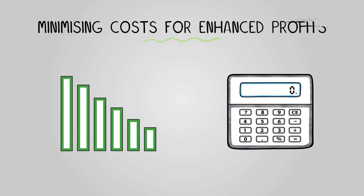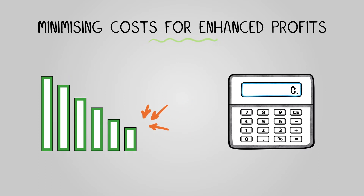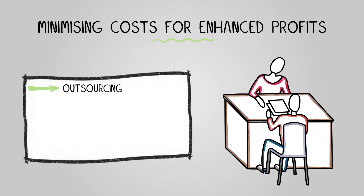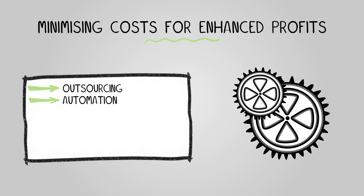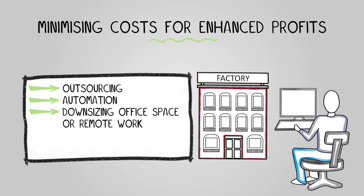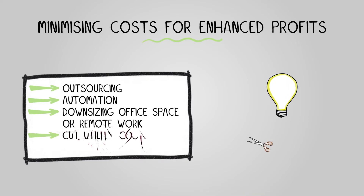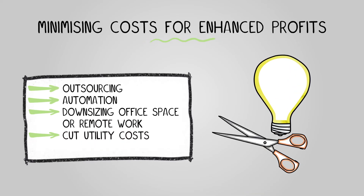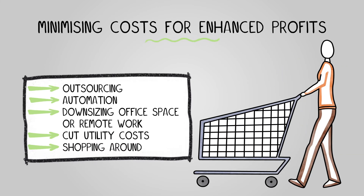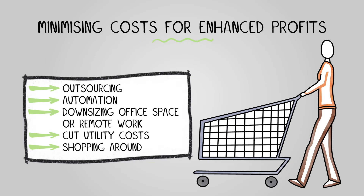Rather than increasing revenue to increase profits, we can also achieve increased profits by keeping our costs down. You could consider outsourcing — for example, hiring an external marketing agency instead of an in-house team. Automation can be your friend, as machines don't need breaks and can often do work faster and more efficiently. Downsizing your office space or encouraging remote work can save on rent. We can cut utility costs by using energy-efficient tech and encouraging staff to be less wasteful. And shopping around for cheaper suppliers can save money, but be cautious — you don't want to compromise quality.